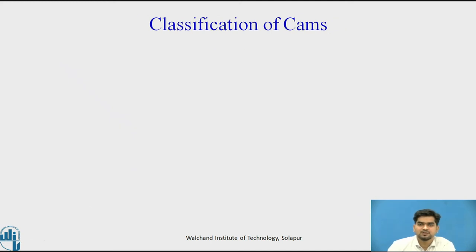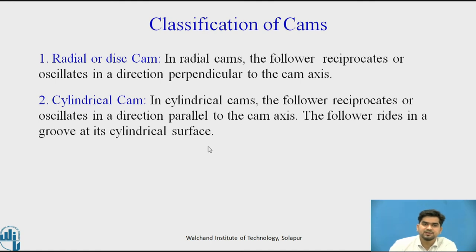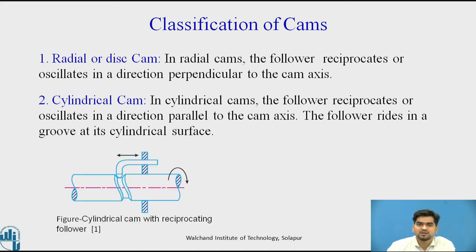Now we will see the classification of Cams. The first type is the radial or disc Cam, in which the follower reciprocates or oscillates in the direction perpendicular to the axis of the Cam. All the follower types we have seen so far use radial or disc Cams. The second type is the cylindrical Cam, in which the follower reciprocates or oscillates in the direction parallel to the Cam axis. The follower rides in a groove at the cylindrical interface.